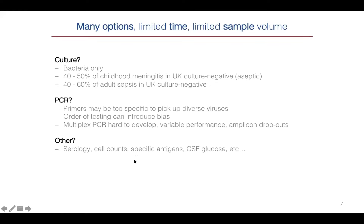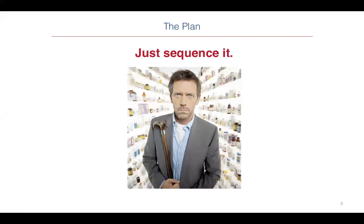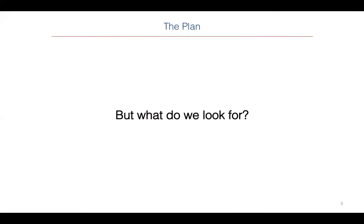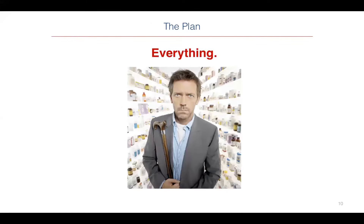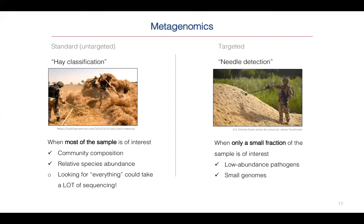There are lots of other options going all sorts of weird and wonderful ways. We can do serology, cell count, look for specific antigens, look for glucose in the CSF, and so on — but that's a lot of testing. Dr. House says just sequence it, stop wasting time. That's great, but what do you look for? Well, everything — you're sequencing, aren't you? Not so easy.